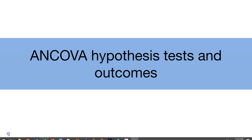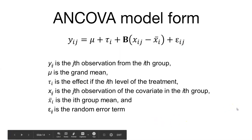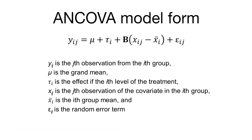This video will talk about the hypothesis tests and outcomes that you might get from an analysis of covariance. Let's take a step back and look at the model form for the analysis of covariance. We're predicting y_ij, the jth observation from the ith group. We may have different levels or treatments with observations within each, a grand mean, and some effect of the ith level of the treatment represented by tau sub i.